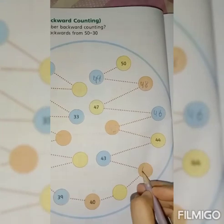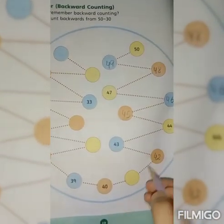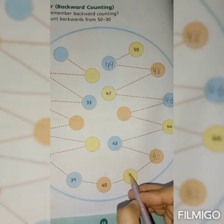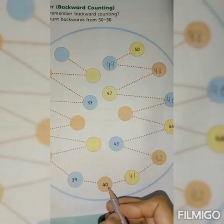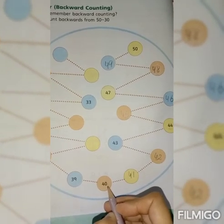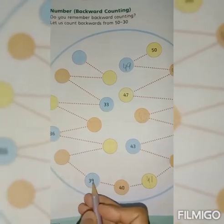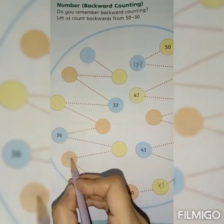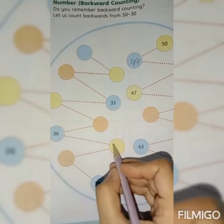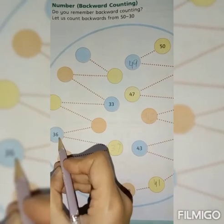Before 43, 42. What comes before 42? 41. Before 41, 40. Before 40, 39. Before 39, 38. Before 38, 37. Before 37, 36.